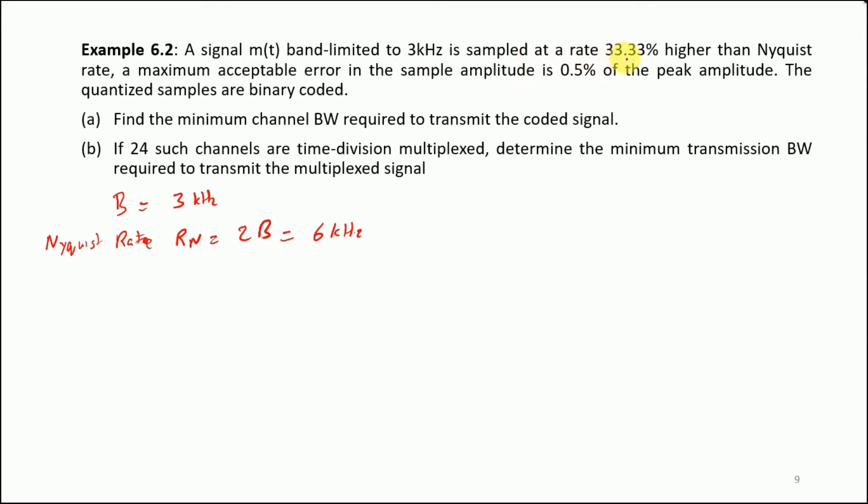But it says that the actual rate is 33.33% higher than the Nyquist rate. So the actual rate Ra is Rn multiplied by 4/3, which is going to give us 8 kilohertz, or simply 8000 samples per second. Our actual rate is higher than the Nyquist rate, which is desirable.